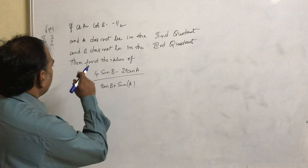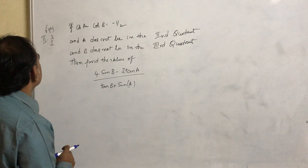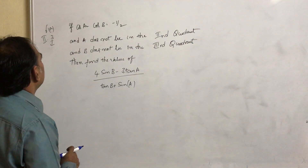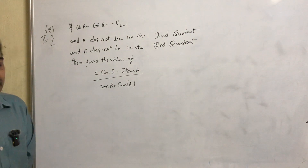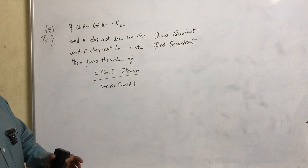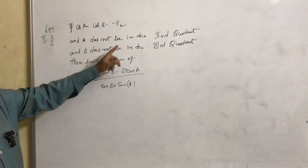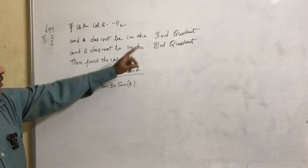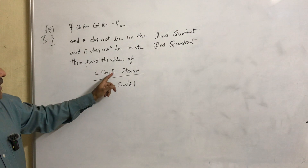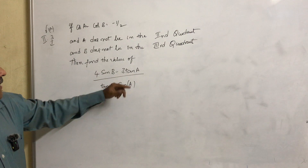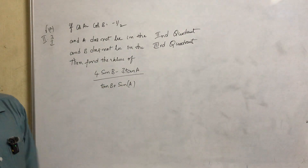Today we will see this problem. Given: cos a equal to cos b equal to minus 1 by 2, and a doesn't lie in the second quadrant and b doesn't lie in the third quadrant. Find the value of 4 sin b minus 3 tan a, whole divided by tan b plus sin a.